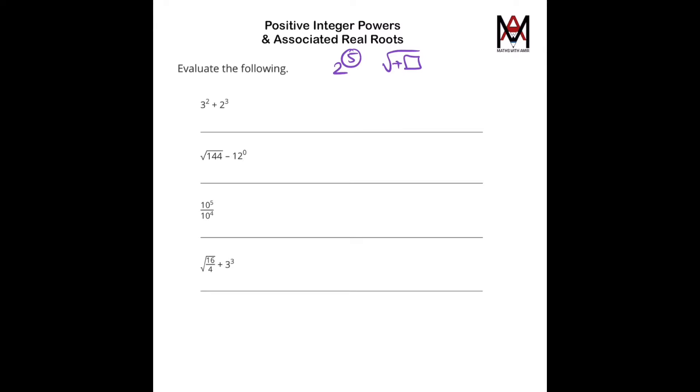The first question here, 3 squared is 3 times 3 plus 2 cubed, that's 2 times 2 times 2, equals to 9 plus 8, equals to 17.